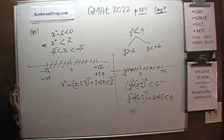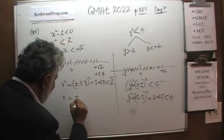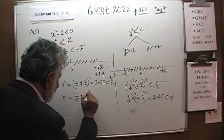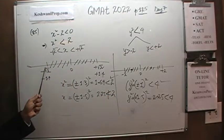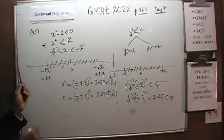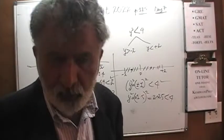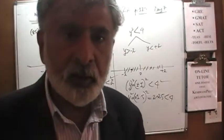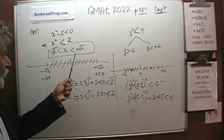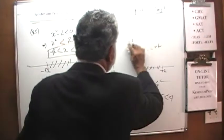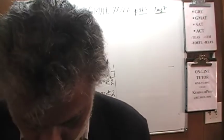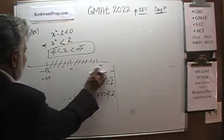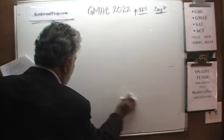For example, if x happens to be either positive or negative 1.3, when we square it we get 1.69, and 1.69 is in fact less than 2. It works. But 1.5 would not work — if x is positive or negative 1.5, squared it is 2.25, and 2.25 is not less than 2. So the answer is x has to lie between negative square root of 2 and positive square root of 2. That was 85. That's why this question is considered a medium question — it's easy for somebody who understands the concept.